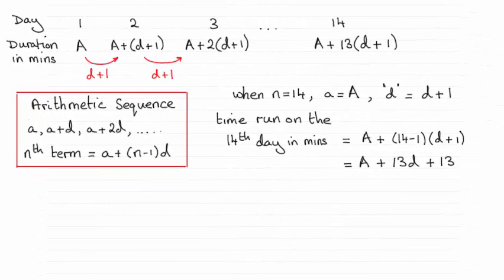Hi there. So for this question then, you had to show that Zinn ran a time of a plus 13d plus 13 minutes on the 14th day.